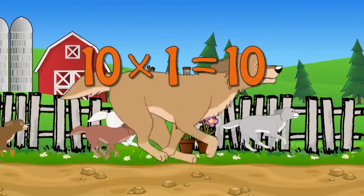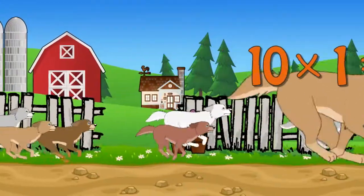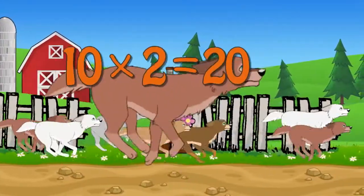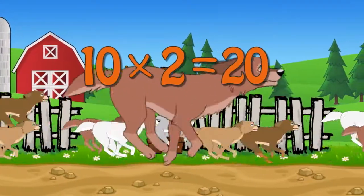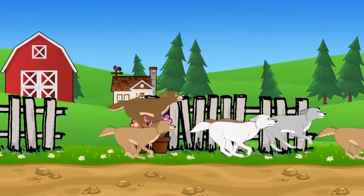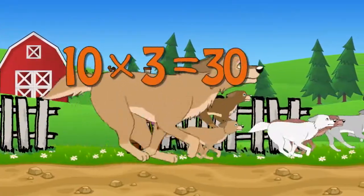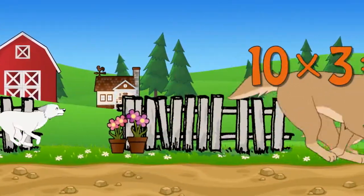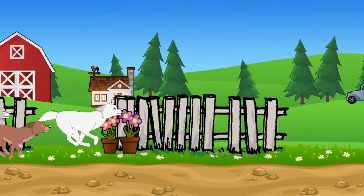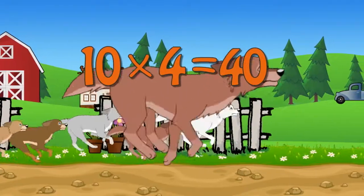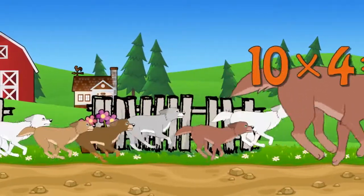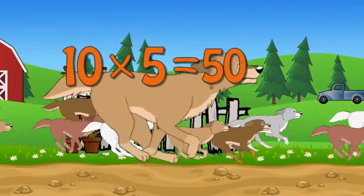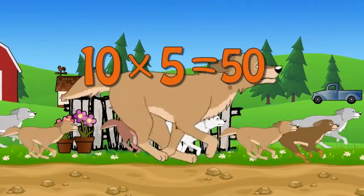Ten times one is ten. Ten times two is twenty. Ten times three is thirty. Ten times four is forty. Ten times five is fifty.